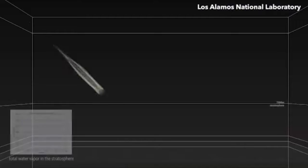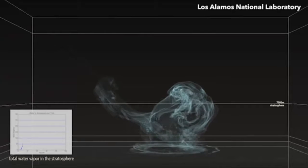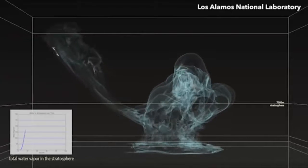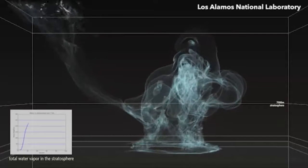NASA has warned that the peanut-shaped BN509 is potentially hazardous, which means it could come very close to Earth in its future orbits.